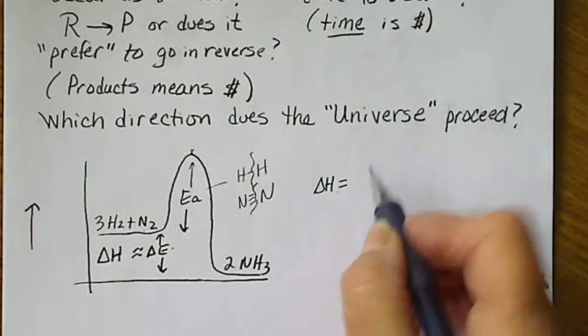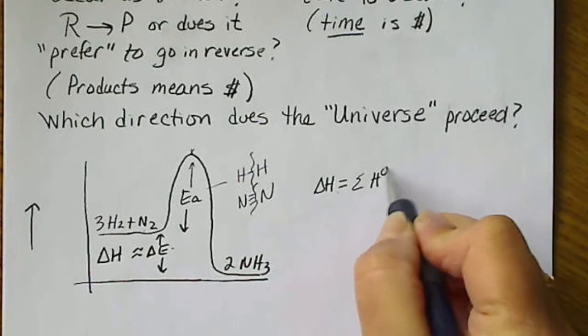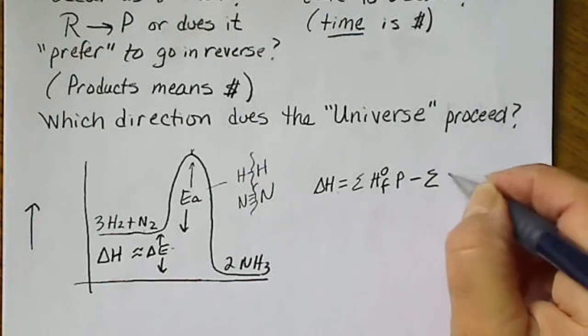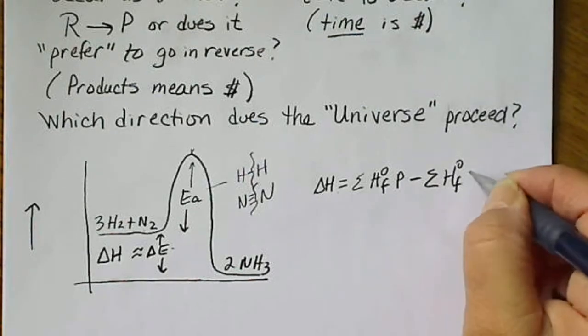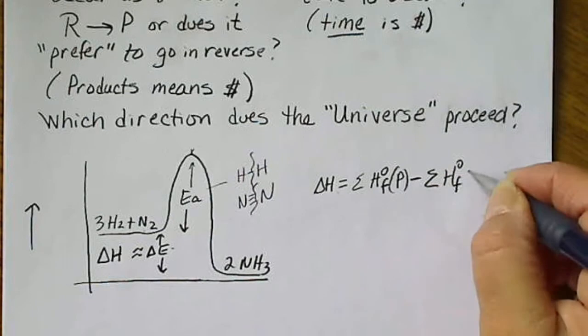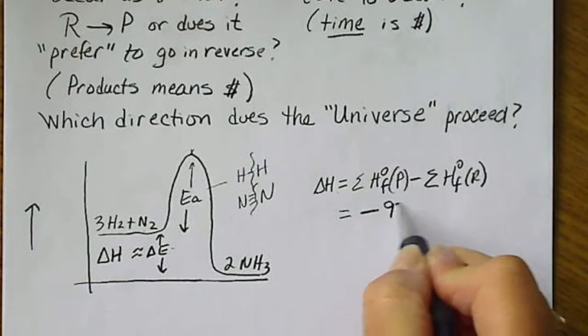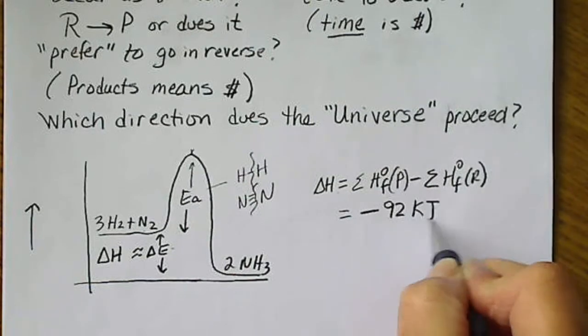It's going to be the sum of all of our heats of formation of all our products minus the sum of the heats of formation of all the reactants. If we do this, we'll end up getting negative 92 kilojoules.